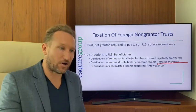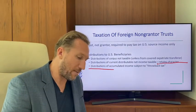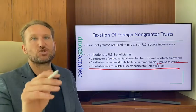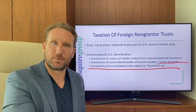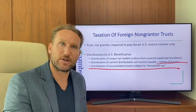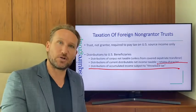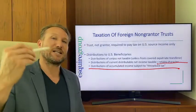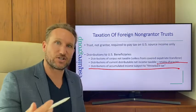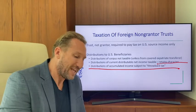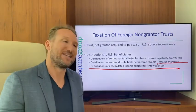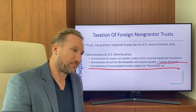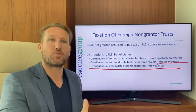The kicker with non-grantor trusts is what happens when the foreign non-grantor trust distributes accumulated income. For example, if two years ago the trust earned income but made no distributions — that's accumulated income. When the trust later distributes that accumulated income, it's subject to what's called the throwback tax — essentially an interest charge on the undistributed income from prior years.